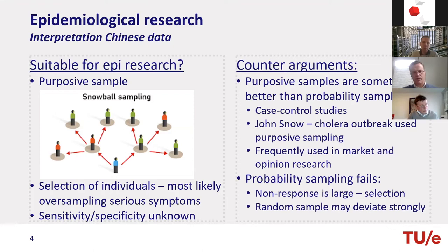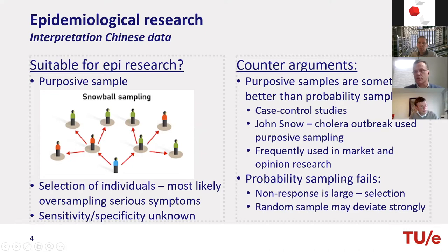Of course there's a counter-argument for why we should still continue. Purposive sampling is sometimes better than probability sampling — case control studies in epidemiology are an example, and John Snow's famous cholera outbreak in London used a purposive sample. It's frequently used in market and opinion research. Also, probability sampling is not always perfect — we might have lots of non-response, and a random sample doesn't mean it perfectly represents the original population. So we continue the research, keeping these limitations in mind.